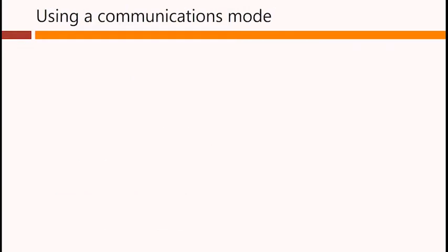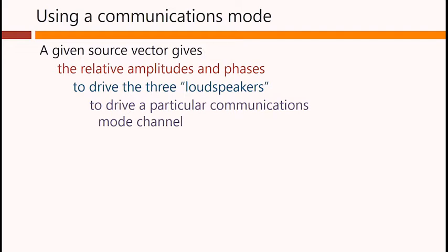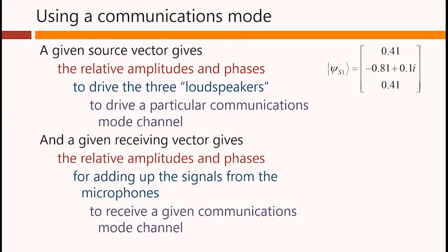How would we use a communications mode? Well, the idea is that a given source vector gives the relative amplitudes and phases to drive the three loudspeakers to drive a particular communications mode channel. So this vector of relative complex amplitudes here.